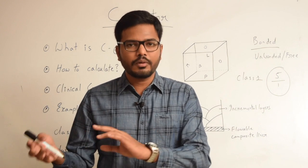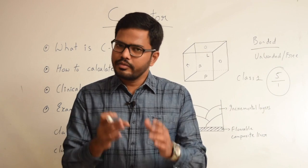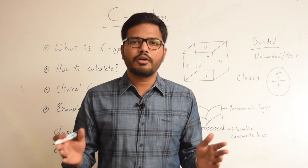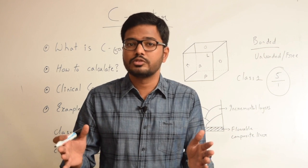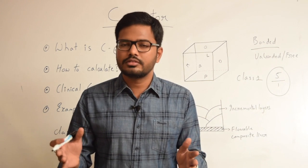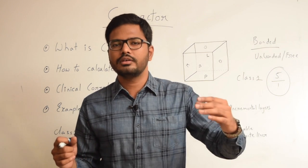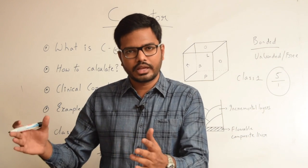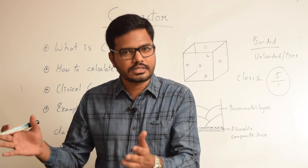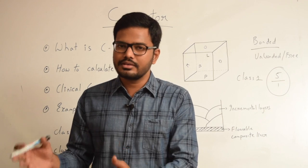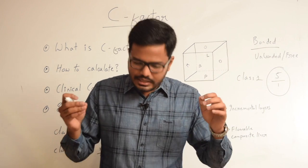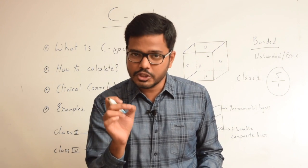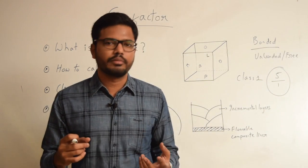So depending upon the shape of the cavity, the C-factor changes. The width of the cavity is also related to C-factor — the wider the cavity, the greater the free surface area, and hence the C-factor will be much less. Since C-factor and the unbonded surface are inversely proportional, the greater the width of the cavity, the greater is the free surface area, and as a result the C-factor decreases. Several studies have shown that when C-factor is greater than 1, there is a potential for bond disruption.